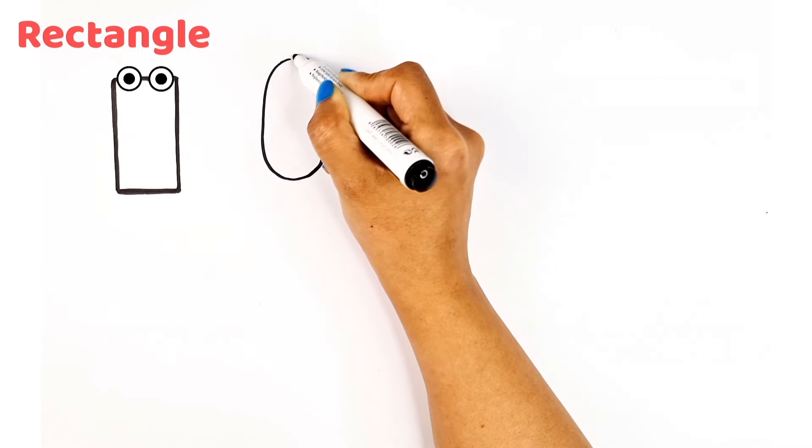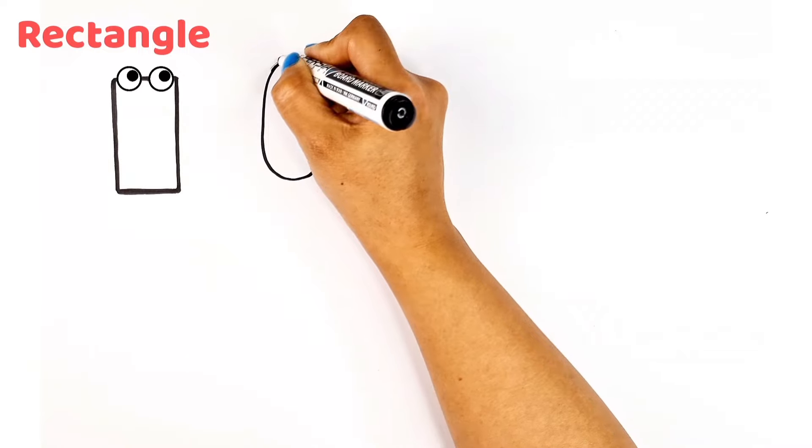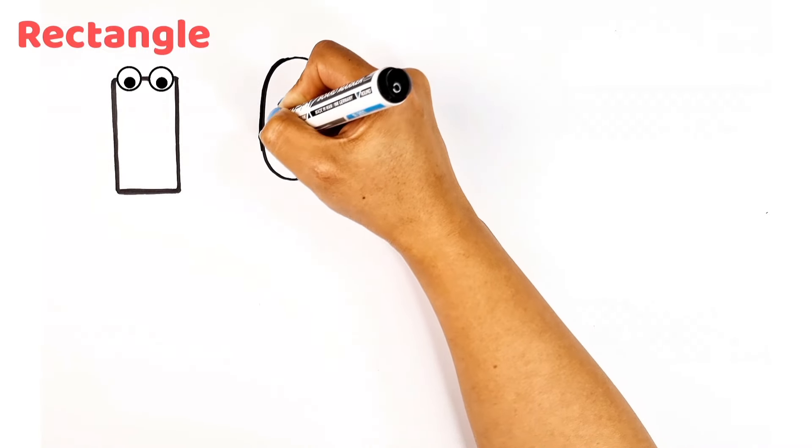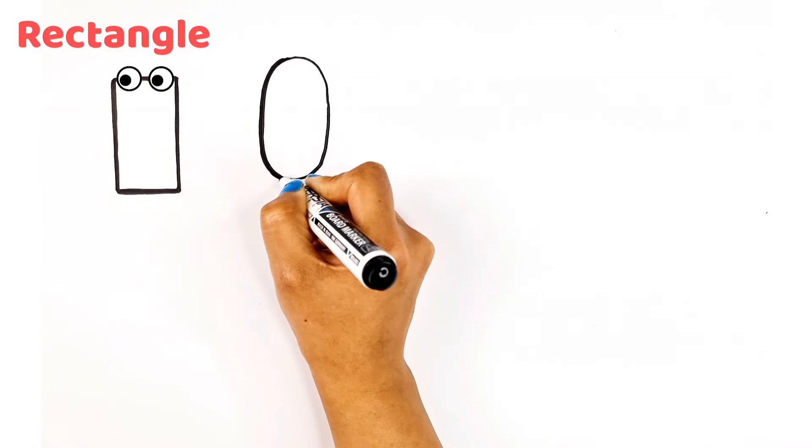The next shape is called an oval. Yes, it reminds me of an egg or a drawn circle. Well, now you can carefully find oval-shaped items.